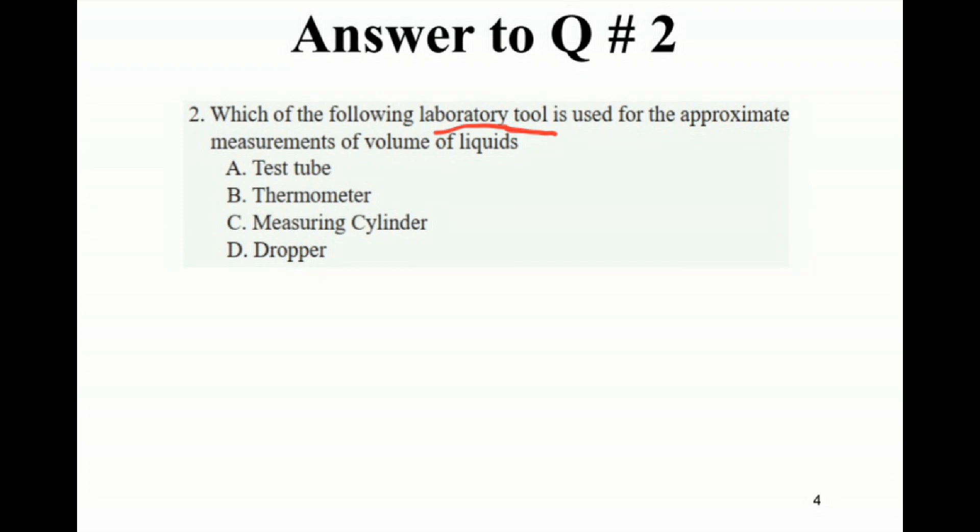Measuring cylinders are used for measuring volume of liquids. A dropper is a device used to transfer tiny amounts of liquids.